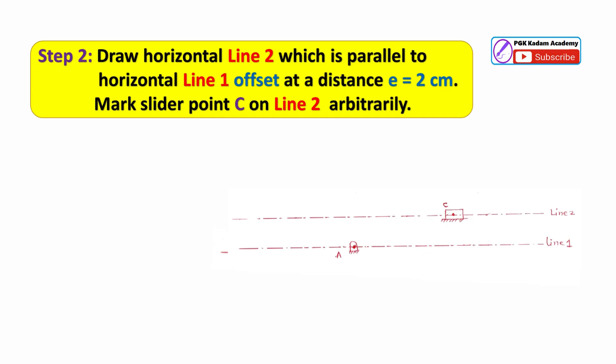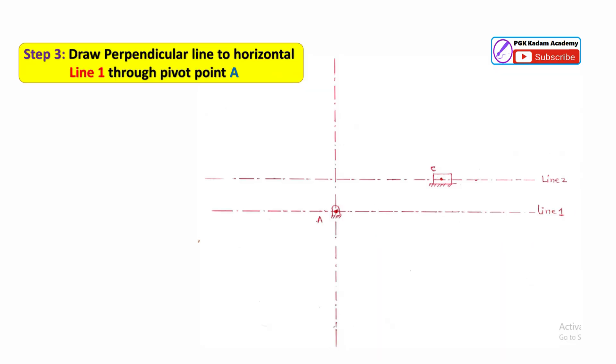Mark slider point C on line 2 arbitrarily. Step 3: Draw a perpendicular line to horizontal line 1 through pivot point A.